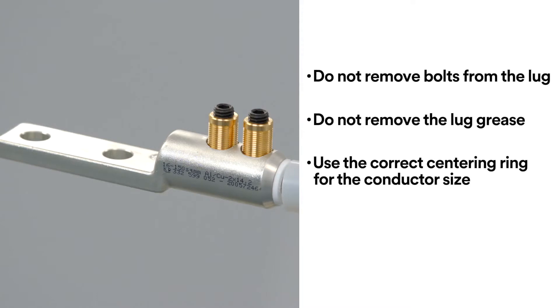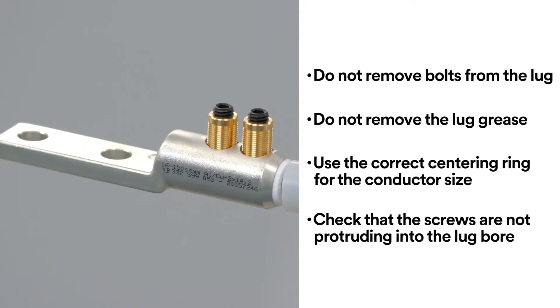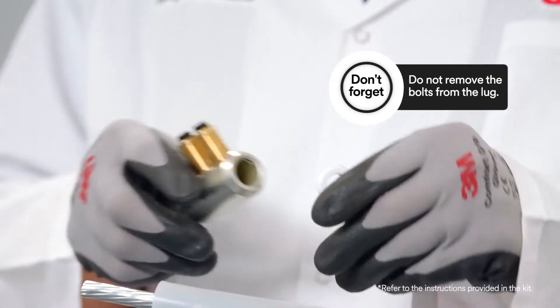Make sure that you use the correct centering ring for the conductor size. You also need to check that the screws are not protruding into the lug bore. Once you've done these checks, it's time to install the lug.